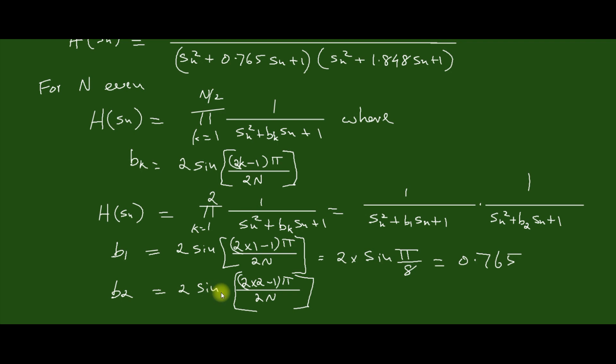Similarly, B_2 equals 2·sin((2·(2)-1)·π/(2·N)), which is 2·sin(3π/8), which equals 1.848.